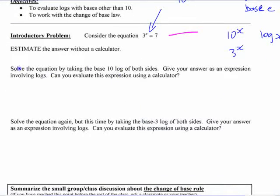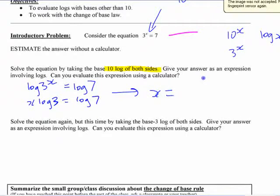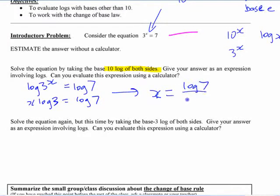We're going to solve it first by taking the log base 10 of both sides. You can probably almost do this in your sleep right now. Log of 3 to the x equals log of 7, or x log 3 equals log 7, which gives us x is equal to log 7 over log 3.